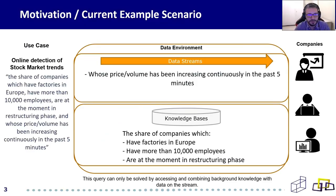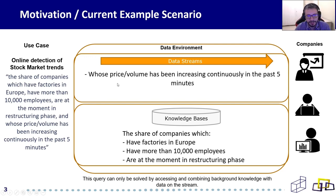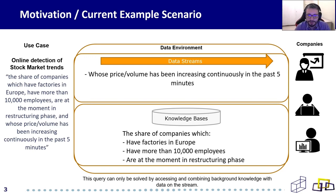The motivation of this work is to address requirements from use cases like this one. These are use cases where you have to combine data from the stream with data from background knowledge bases. For example, in stock market trends, a stock broker may want to know not only the price of a stock, but also if the company has factories in Europe, or if the company has more than 10,000 employees. This type of query can only be solved by accessing and combining background knowledge with data on the stream.